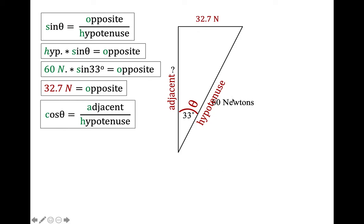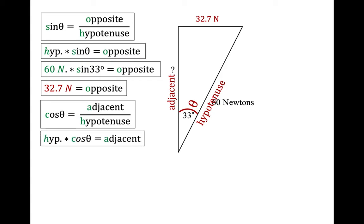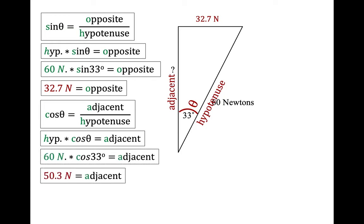That should make sense — it's significantly less than the hypotenuse. Moving on to the adjacent side: cosine of theta is adjacent over hypotenuse. Multiply the hypotenuse to both sides, plug in the values, and we get 50.3 newtons. This makes sense — the adjacent side is somewhat less than the hypotenuse, and the opposite is even less than the adjacent. So our values make sense. I'll leave the rest of the problems on the front page to you; it really is just SOHCAHTOA.